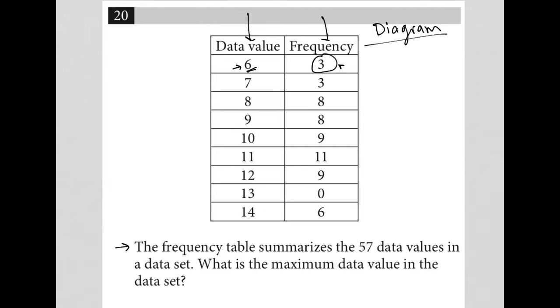The question says the frequency table summarizes the 57 data values in a data set. What is the maximum data value in the data set? All right.